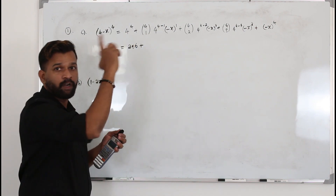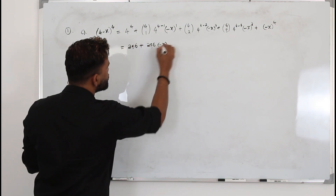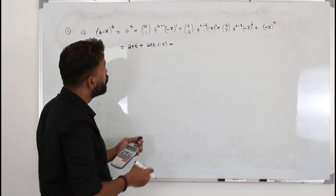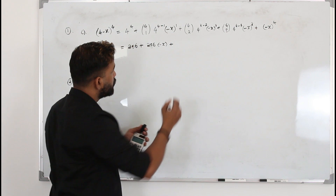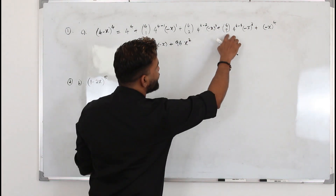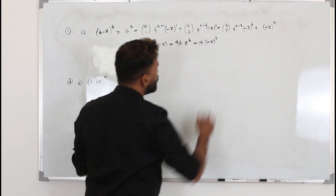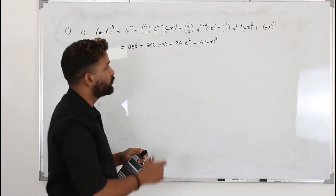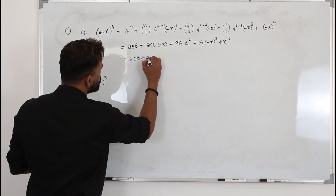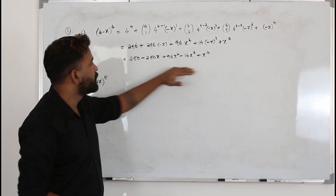Calculating each term: 4C1 = 4, 4³ = 64, giving 256(−x) = −256x. 4C2 = 6, 4² = 16, giving 96x² (positive, since squaring). 4C3 = 4, 4¹ = 4, times (−x)³ = −x³, giving −16x³. The last term is x⁴ (positive). Final expansion: 256 − 256x + 96x² − 16x³ + x⁴.